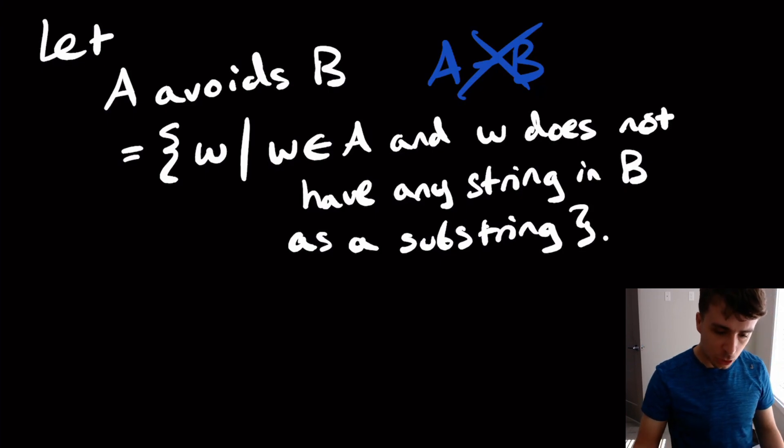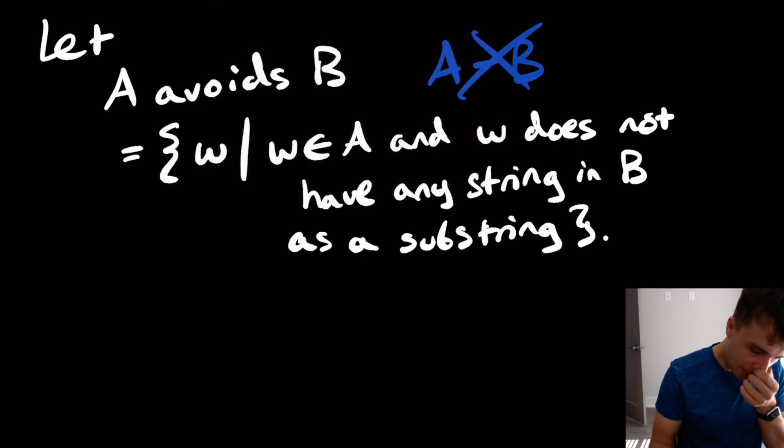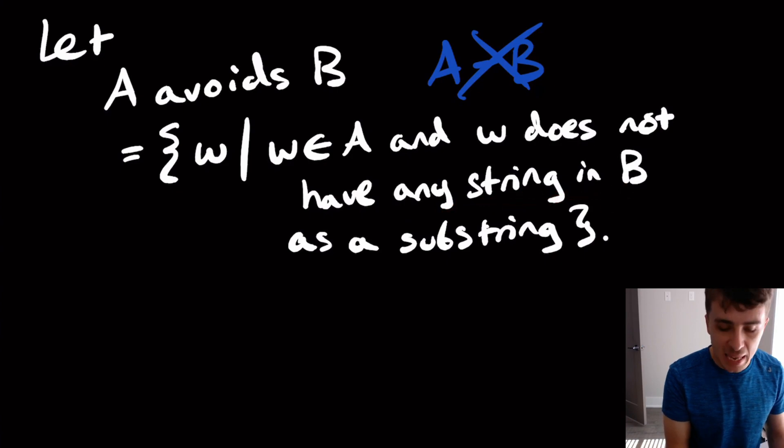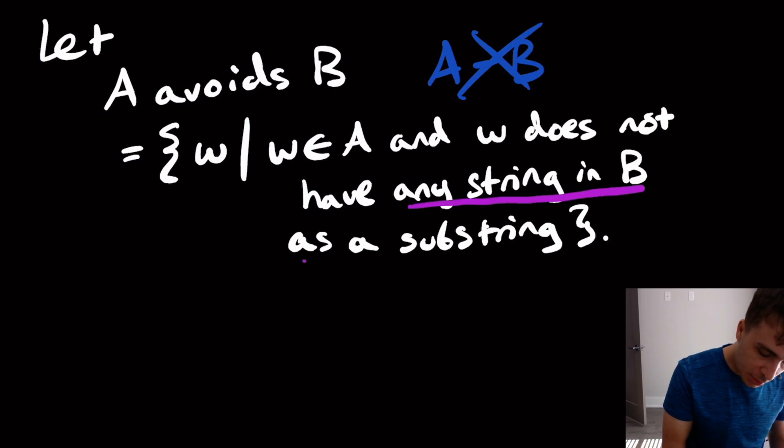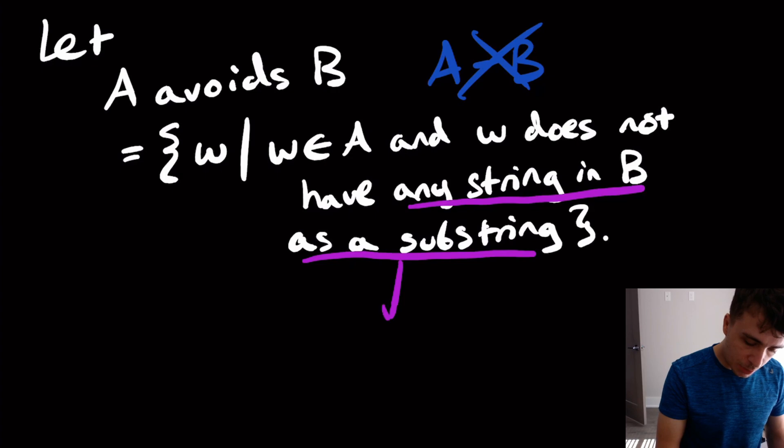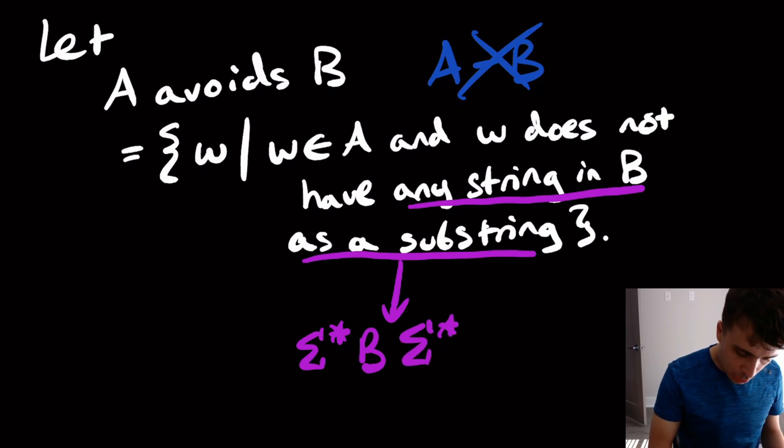So let's actually try to think about this in a slightly different way. Well, what does it mean that a string in A has any string in B as a substring? Well, how can we actually classify what the strings in B, or any string for that matter, that contains something in B as a substring? So this part right here, any string in B as a substring, we can actually represent that as sigma star B sigma star, because that's all the strings that have something in B as a substring.